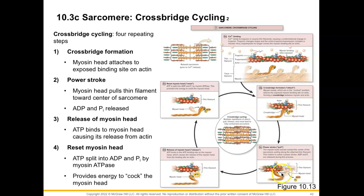Our next step is for the myosin head to release from actin, and to do that we need ATP. ATP binds to the ATP binding site on myosin, allowing the myosin head to release. Next, the myosin head must reset: ATP is split into ADP and inorganic phosphate by the enzyme myosin ATPase, providing energy to cock the myosin head back so it can reattach. This cycle happens over and over again to move actin filaments toward the M-line for full contraction, and as long as calcium is present the cycle continues.